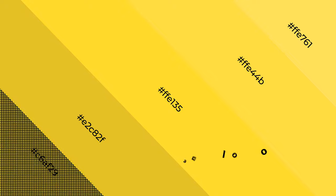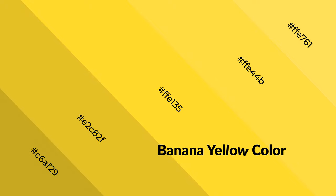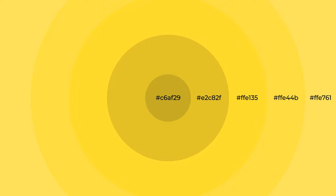Banana yellow also evokes joy, passion, love, and even anger. You can see warm colors used in restaurants and gyms.